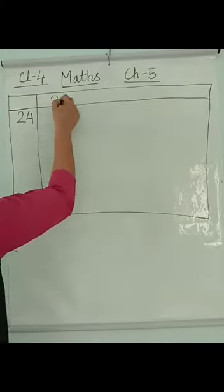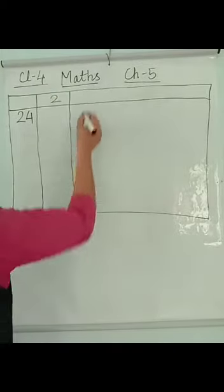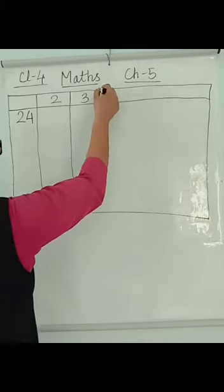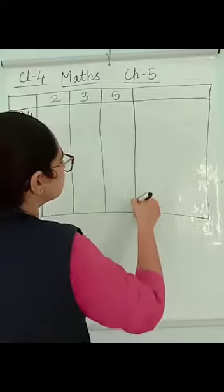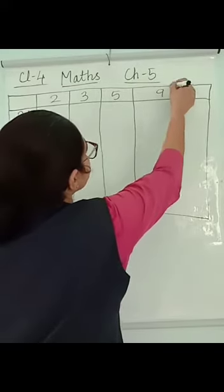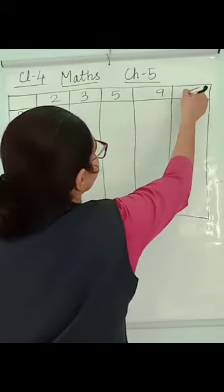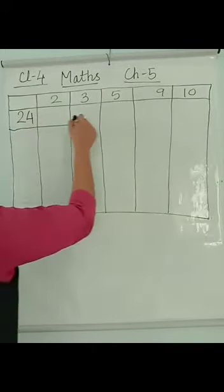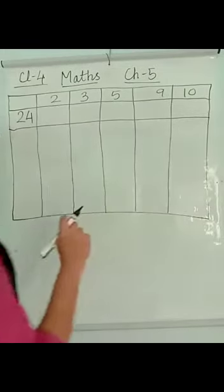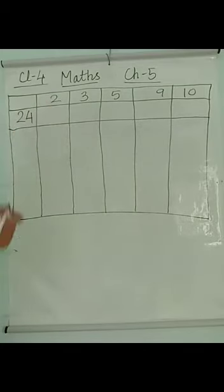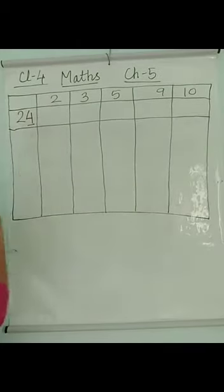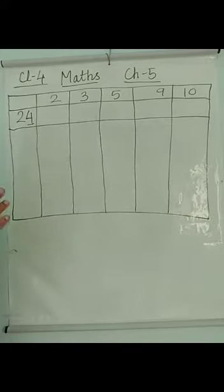You have to check the divisibility of this number by 2, 3, 5, 9 or 10. In this number, you have to check ones place. Ones place has 4.